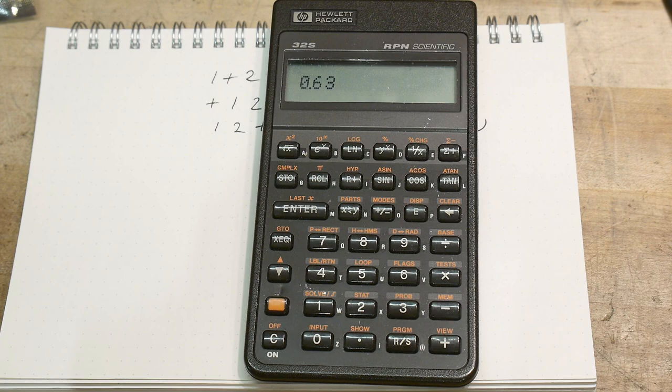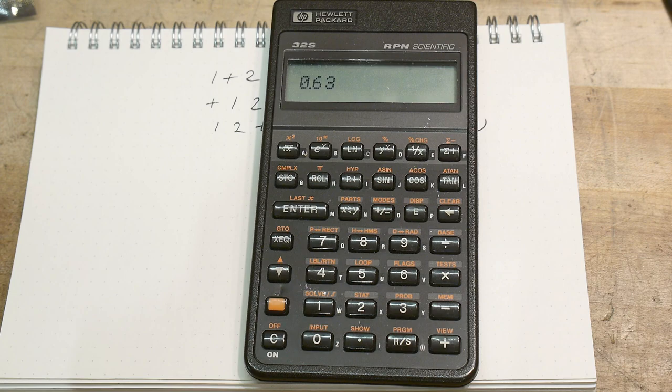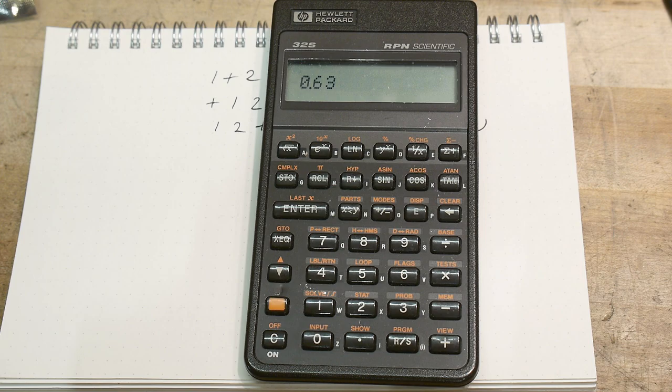But you can't buy RPN, well, I guess you can. There's one RPN calculator that you can still buy. Maybe two. Yeah, I think there's two. So let's show some more.